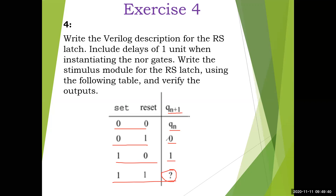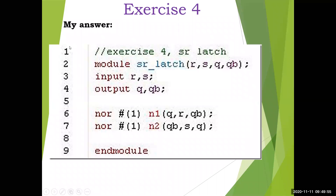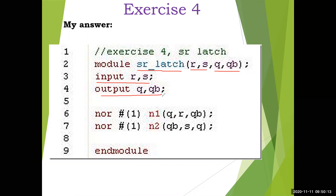Now write the program. The gate-level design is already given. So the module name is SR latch. R and S are the inputs, Q and Q-bar are the outputs — that is the list of ports. Input R and S and output Q and Q-bar are declared. Two NOR gates are instantiated, and for both gates a delay of one is added.